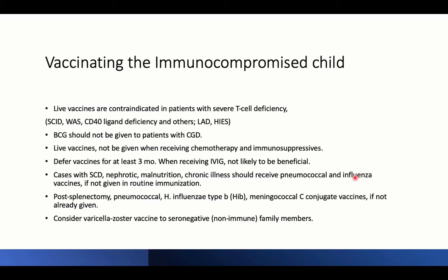Influenza is a killed vaccine and the pneumococcal is a polysaccharide vaccine, so both can be given in cases with immune deficiency. Post-splenectomy, there is an immune deficiency state. Protection with pneumococcal, Haemophilus influenzae, and meningococcal vaccines — all polysaccharide vaccines — should be given with booster doses to guard against encapsulated bacteria. Lifelong antibiotic prophylaxis with oral penicillin or erythromycin should also be given post-splenectomy.